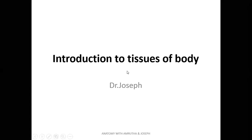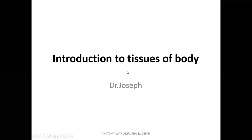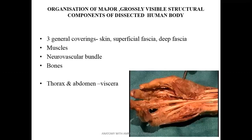Today we will be seeing an introduction to tissues of the body. I will be following Cunningham's Manual of Anatomy, first volume, introductory sections. The coverings of the body, from superficial to deep, are three: skin, superficial fascia, and deep fascia.